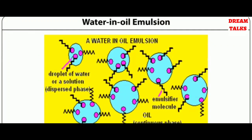In the figure of a water-in-oil emulsion, the yellow portion is the continuous phase made up of oil, and the blue circles are the water droplets dispersed in oil. The pink balls with spiral tails represent the emulsifier molecules — the pink part is the polar head and the black spiral tail is the non-polar part. The non-polar part binds to the oil phase, while the polar head connects to the water molecule, thus stabilizing the water-in-oil emulsion.